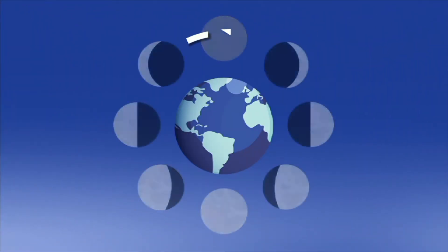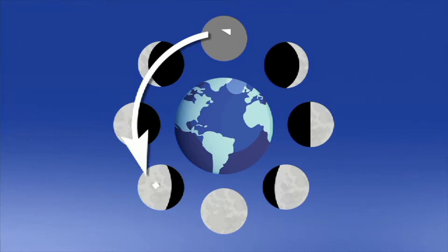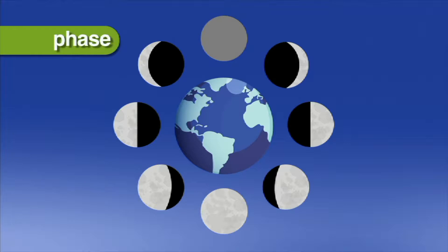As the moon circles the Earth every 29.5 days, we see the bright parts of the moon's surface at different angles. These are called phases of the moon, and they appear to us as different shapes.